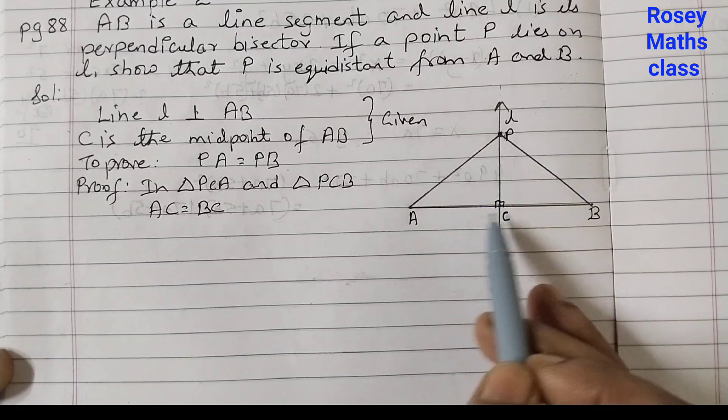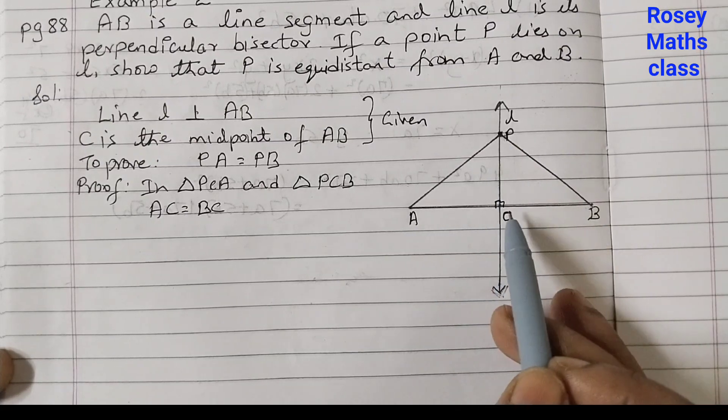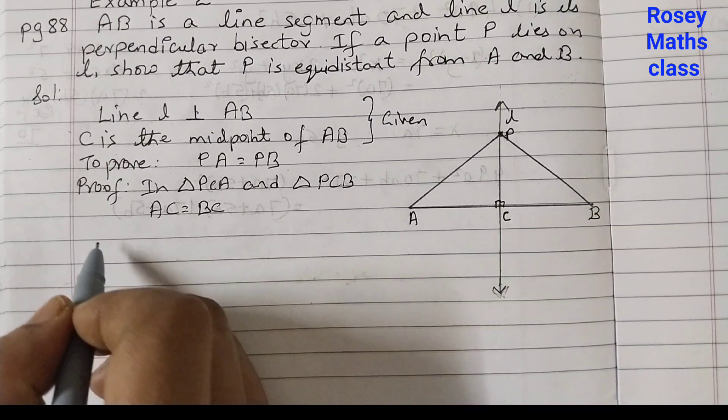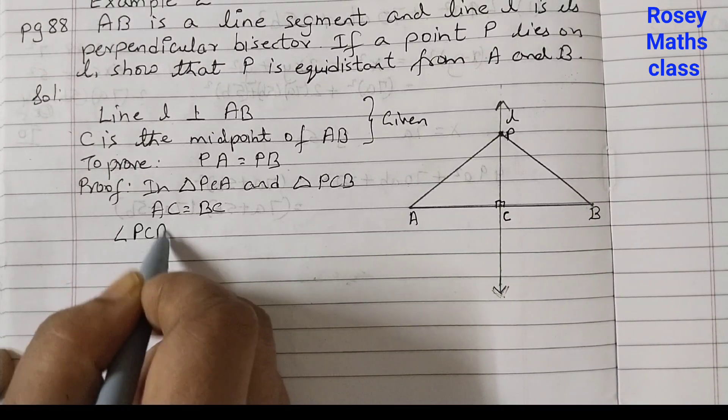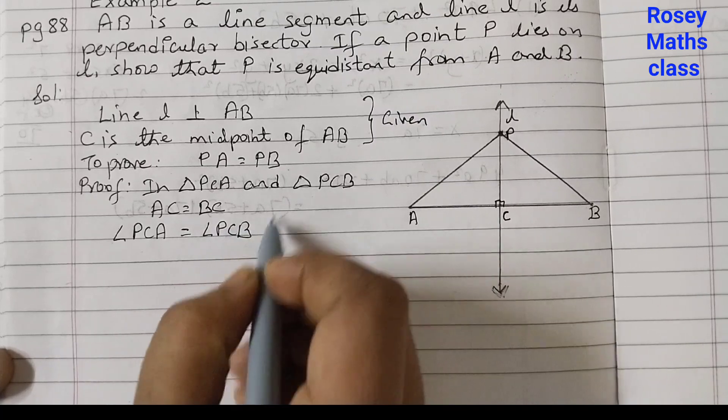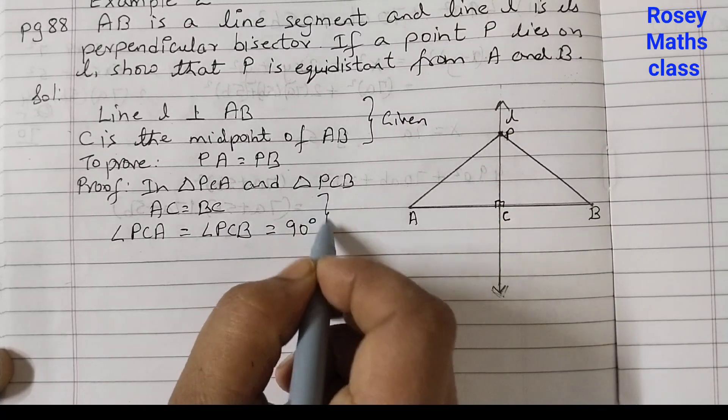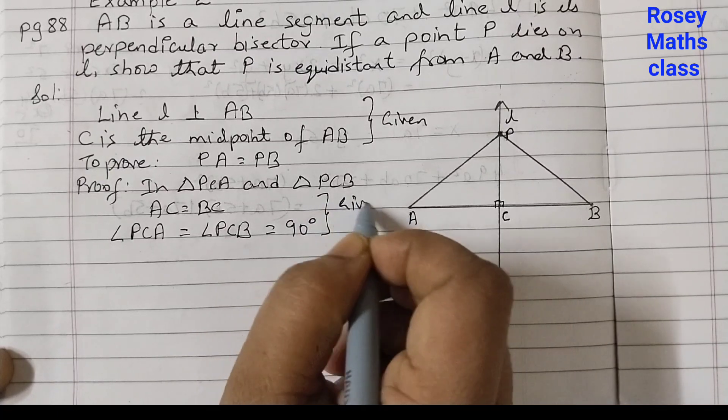Angle PCA is equal to angle PCB that is equal to 90 degrees because this is perpendicular. So for this two we can write the reason as given.